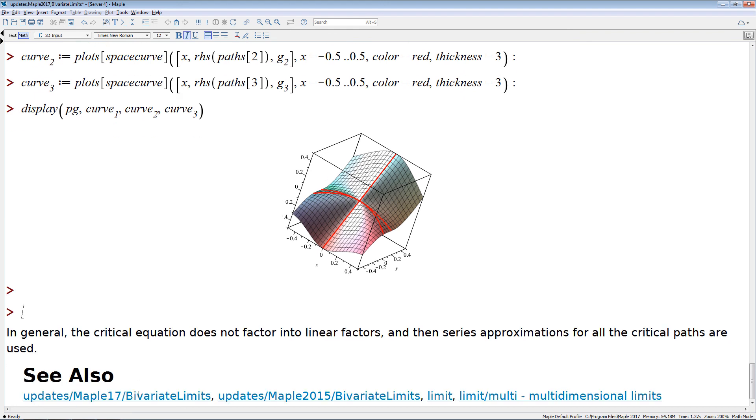And in general, just as a closing remark, the critical equation does not necessarily factor into linear factors, as we just had in our last examples, but then instead of using the linear factors, we can compute series approximations to all the critical paths and use those, and we only need approximation up to a certain order in order to determine what the limits are. Thanks very much for listening!